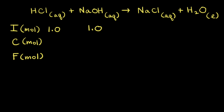Next, let's think about a situation where we have equal moles of our strong acid and strong base — for example, one mole of HCl and one mole of NaOH. To help us think about what's happening, we're going to use an ICF table, where I stands for the initial number of moles, C stands for the change in moles, and F stands for the final amount of moles. We use an ICF table instead of an ICE table because E stands for equilibrium, and here we assume the reaction goes to completion — so we write F for final amount of moles.